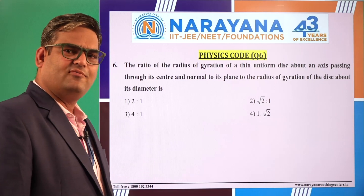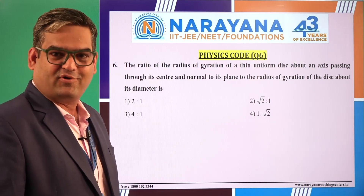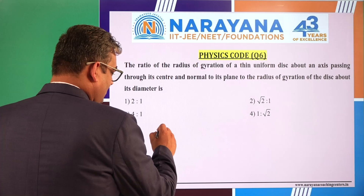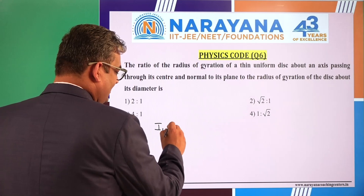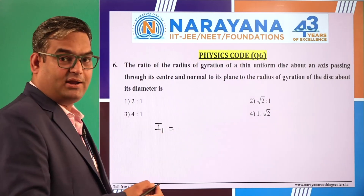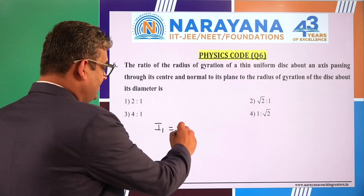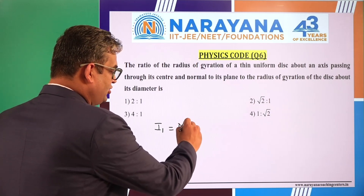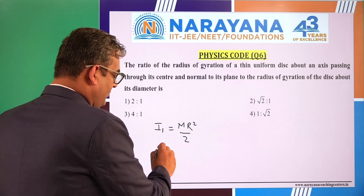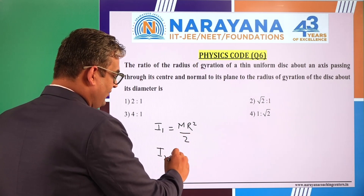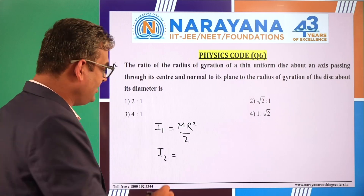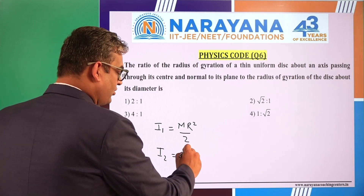First we should write the moment of inertia for these two cases. The moment of inertia when the axis passes through the center of the disc and is perpendicular to its plane is MR²/2. But the moment of inertia when the axis is along the diameter of the disc is MR²/4.